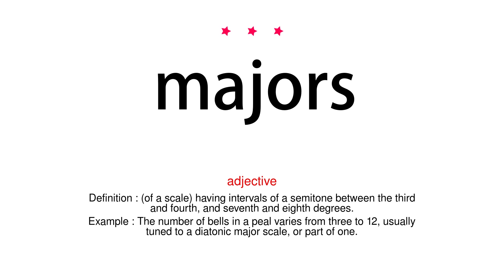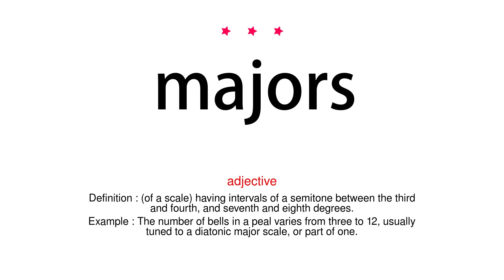Adjective. Definition: Of a scale, having intervals of a semitone between the 3rd and 4th, and 7th and 8th degrees. Example: The number of bells in a peal varies from 3 to 12, usually tuned to a diatonic major scale, or part of one.